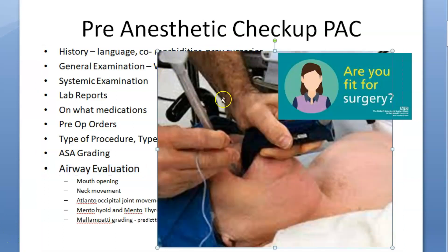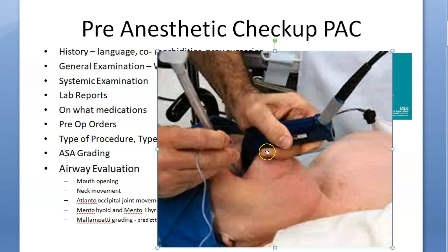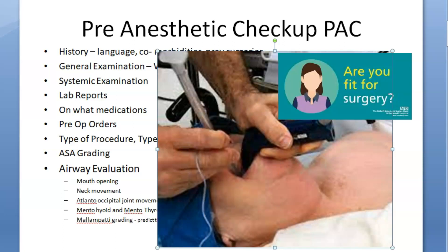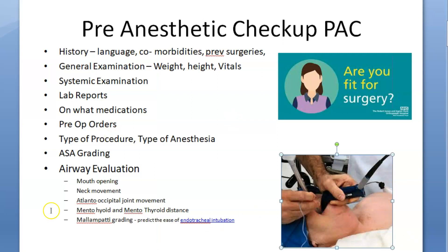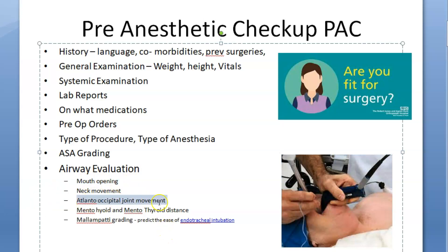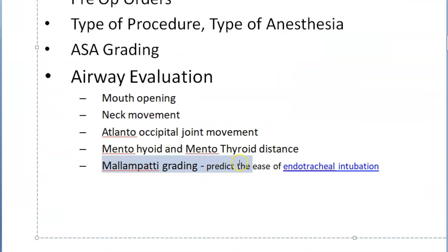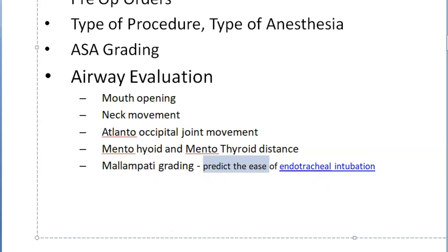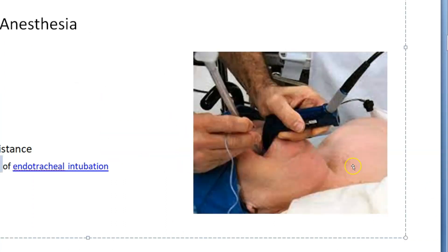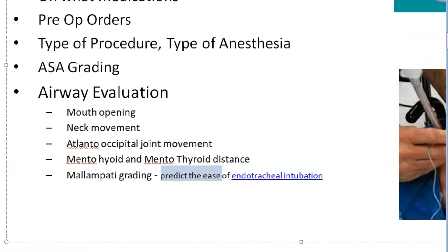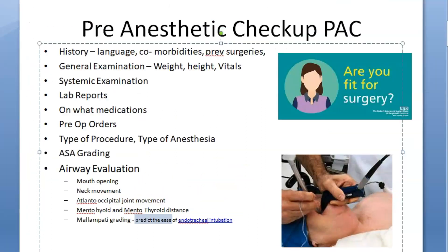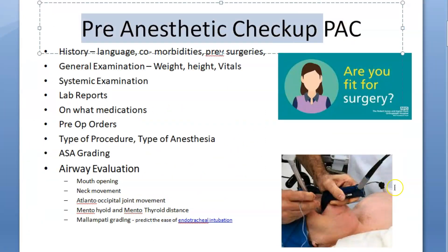In airway evaluation, an anesthesiologist is going to check the ease of intubation. Because if you're giving general anesthesia, the person will not be able to breathe by themselves, so you will have to check mouth opening, neck movement, etc. This is where you get your Mallampati grading. So basically this Mallampati score is going to predict the ease of endotracheal intubation — that is, putting something into your trachea. To check the ease of that, an anesthesiologist will do the Mallampati.